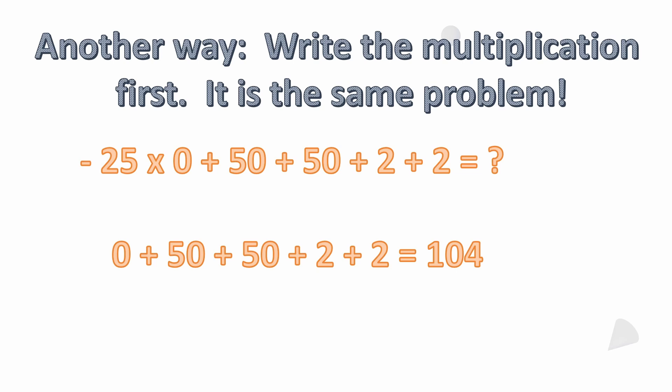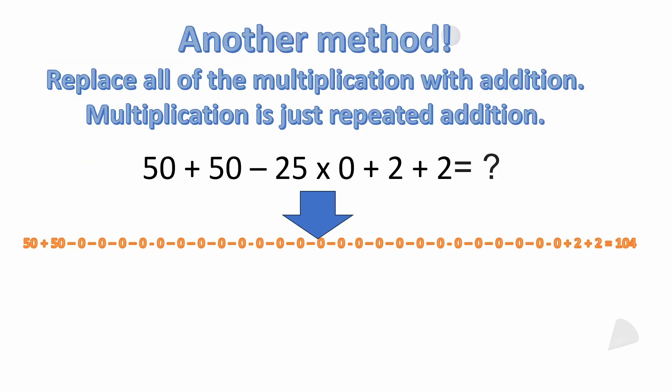And that works out to 0 plus 50 plus 50 plus 2 plus 2, and again that equals 104. Last here, I want to show another method.